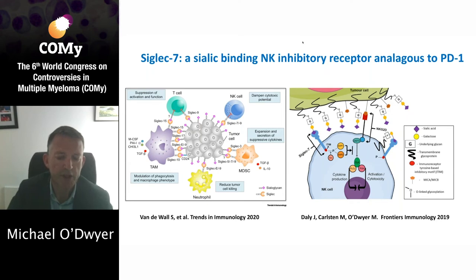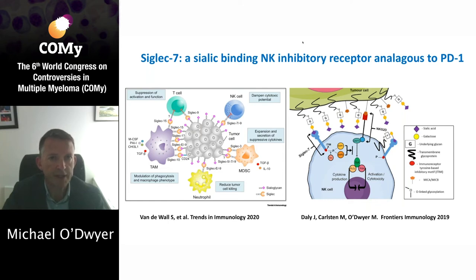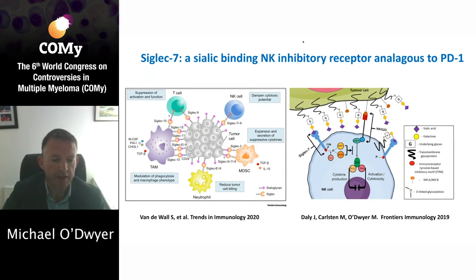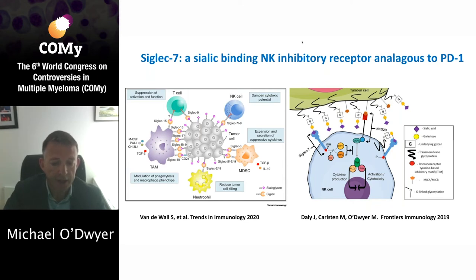My own group has a particular interest in the role of hypersialylation in immune evasion, and this is becoming an area of increasing interest in the whole field of immuno-oncology. Sialylated ligands on the surface of normal cells can act as a kind of self-associated molecular pattern, enabling NK cells to distinguish self from pathogens via inhibitory receptors called Siglecs. Hypersialylation of cancer cells, as you can see in the left-hand figure, exploits this, leading to increased inhibition of NK cytotoxicity via Siglec-7 and, to a lesser extent, Siglec-9 receptors on NK cells.